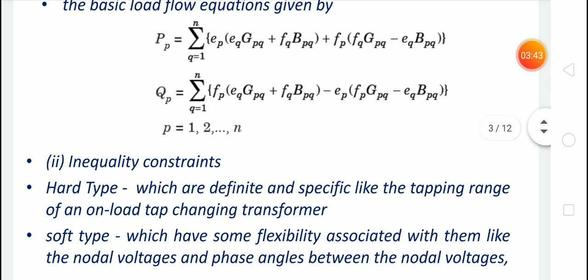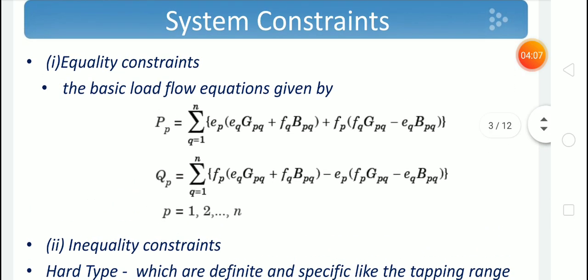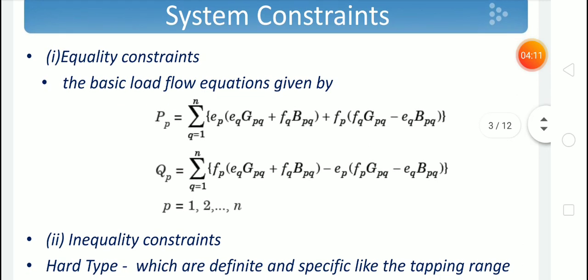There are two types of inequality constraints: hard type and soft type. In the hard type, there will be specific values for the setting, like tap changing of an on-load tap changing transformer. In the soft type, there is some flexibility, like node voltages and phase angles between node voltages. We can discuss the system constraints in detail when we discuss the unit commitment problem.